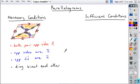Sufficient conditions means there's a set of specific conditions or properties that by themselves will guarantee you have a particular figure. Understand what you're starting with and where you're ending, what you're trying to prove.